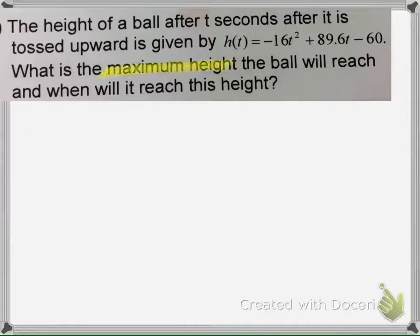This problem asks us to find the maximum height of a ball being tossed upward. By the equation here, we know it's a parabola because it's a quadratic with the highest exponent of 2, and we know it opens downward because the leading coefficient is negative.